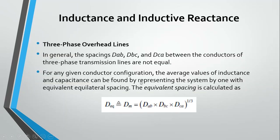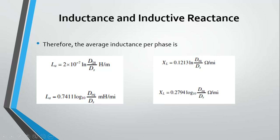In the case of a three-phase transmission line, we have three conductors and the distances between them are not the same. To measure the inductance of a three-conductor system, we take the cube root of the three distances: D_AB × D_BC × D_CA, giving D_N or D_equivalent. The formula changes from D_M to D_equivalent, which is the cube root of all the inter-conductor distances.